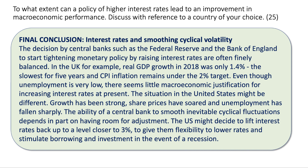The situation in the United States could well be different: growth has been stronger, share prices have been going up, and there has been a big rise in employment. The argument here is that the ability of a central bank to smooth the inevitable fluctuations in GDP depends in part on having some room for adjustment. The United States might decide to increase interest rates now back towards 3% to give them the flexibility to cut interest rates and stimulate borrowing and investment if there is a recession. In that sense, higher interest rates today could give more room for maneuver to improve macroeconomic performance in the event of an inevitable downturn.